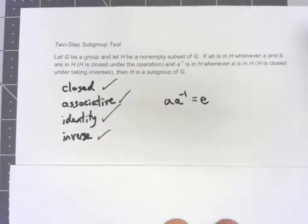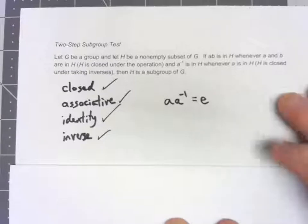By using this, we only have to check two properties to find out that something's a subgroup. Now, if we didn't know it was a subset of an original group, we'd have to go through all four again. But because we know it's part of a larger group, we're kind of inheriting some stuff for free.